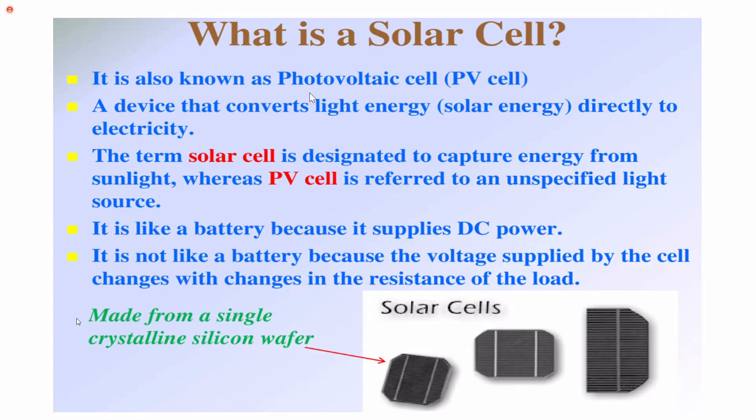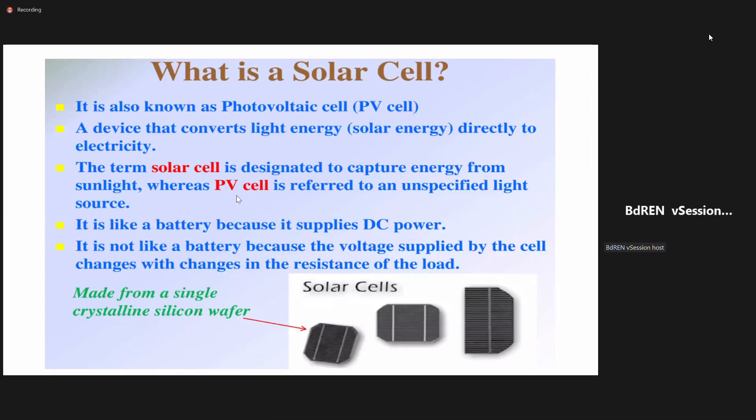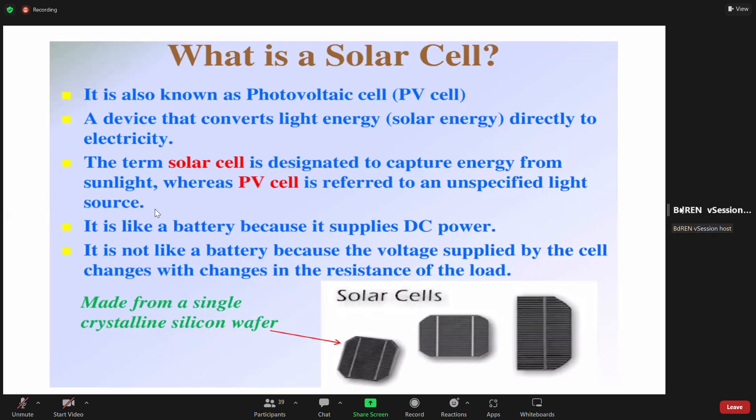First of all, when I was talking about solar cells, I was going to study a device that converts light energy, but solar energy is converted into electricity. Solar cell is designated to capture energy from sunlight. Solar cell. But this PV cell is referred to as an unspecified light source.